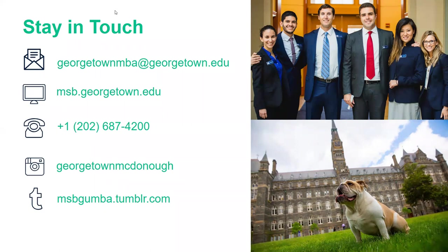Regarding completing the MBA sooner by taking additional courses: for the full-time MBA, it is the full two-year program. For the Flex MBA, we offer more flexibility — as its name suggests, you can complete it in about two and a half years up to five years, depending on your schedule.